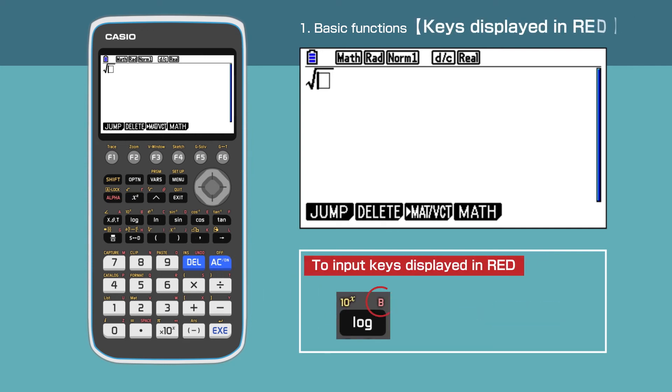In the next example, we will show how to select keys displayed in red. If we want to select the b in red above the log key, we will have to first enter alpha. By doing so, we will see the symbol A in red on the top left corner of the screen.